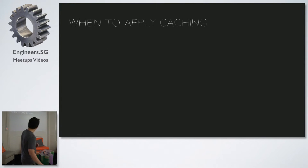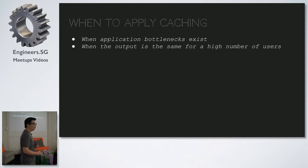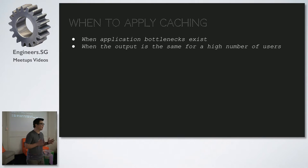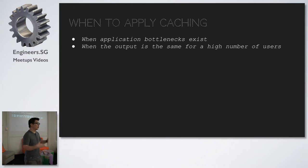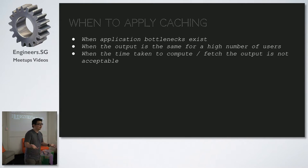When should you apply caching? Obviously when there's a bottleneck, and when the output is the same for a high number of users. On a shopping cart application, you don't want to generate the same page again and again for thousands of users — you can just do it once, cache it, and serve the cache to many users. Also when the time taken to compute or fetch the output is not acceptable — even if results are unique but take five minutes to generate, you might want to cache it.